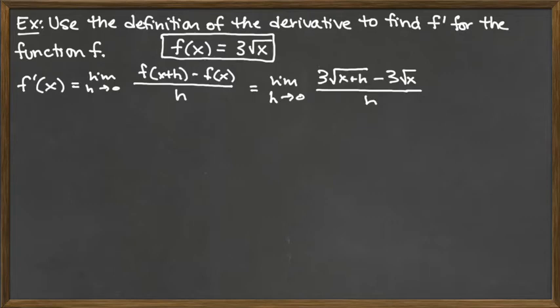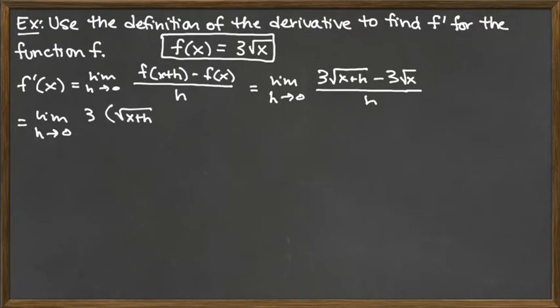When tackling this problem, we can do a quick check: if we try to take this limit directly we would get 0 over 0. So we need to manipulate the expression so that a common factor of h pops out of the top and can be cancelled with the h on the bottom. I suggest first noting that the two terms on the top have the common factor of 3. Pulling that out gives us the limit as h goes to 0 of 3 times the quantity square root of x plus h minus square root of x, all over h. Since we're dealing with a difference of roots, the useful tool to consider is utilizing a conjugate.